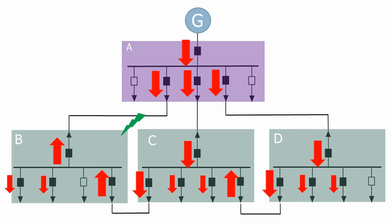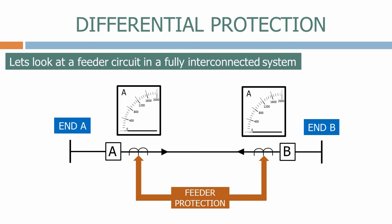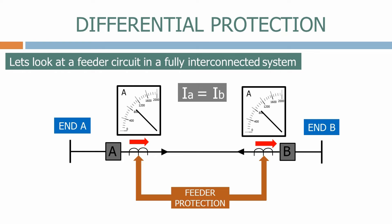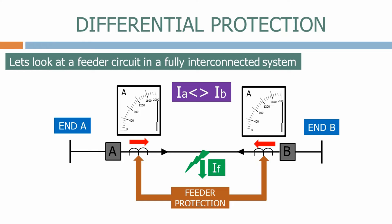Let's now look at our feeder again. With the circuit breakers closed, the currents at both ends A and B are the same and the feeder protection is stable. When we apply a fault on the feeder, because it's a fully interconnected system, the current magnitudes on both ends A and B both increase and the current on End B reverses direction as it feeds the fault from the rest of the network. The currents are no longer balanced on A and B, so the feeder protection detects this difference and trips the circuit breakers, clearing the fault from the system.